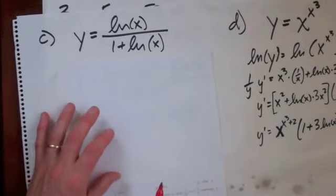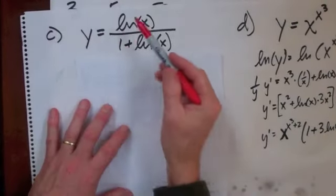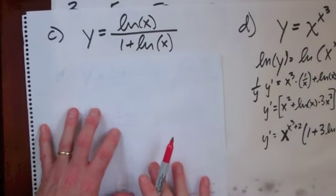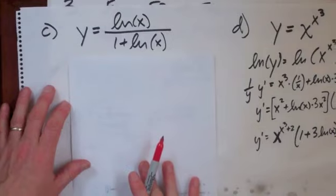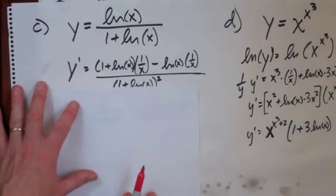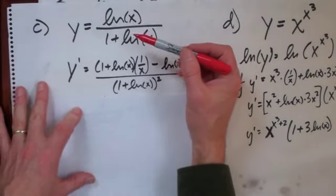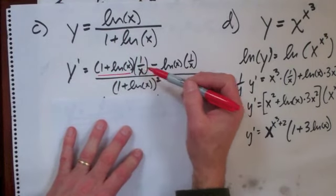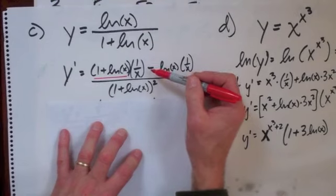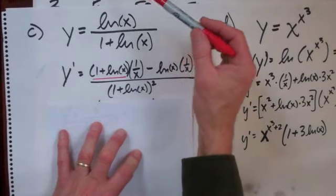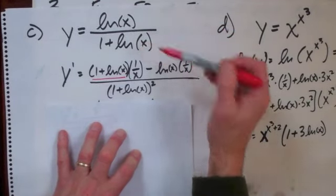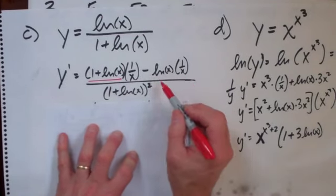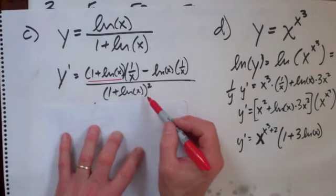Part C here. We've got a log over 1 plus a log. No canceling is allowed. Don't make any mistakes like that. And what I do though, is I'm going to use the quotient rule. I'm going to do the bottom. There's the bottom. Right there's the bottom. Times the derivative of the top, which is 1 over X. Minus the top, sorry, the top times the derivative of the bottom, which is 0 plus 1 over X right there. And then all over the bottom squared.